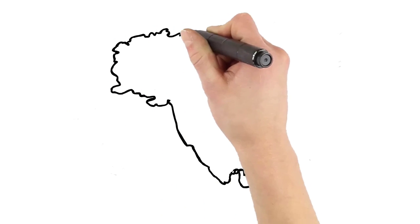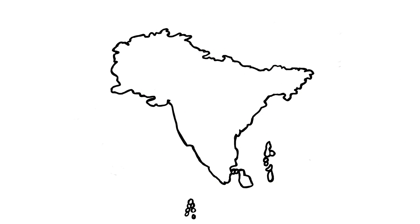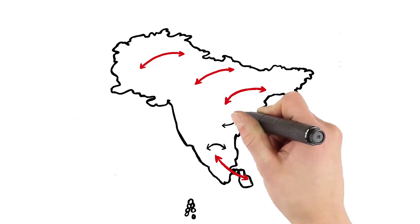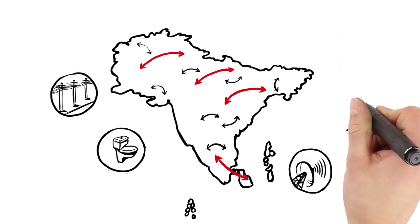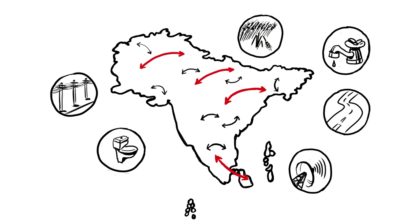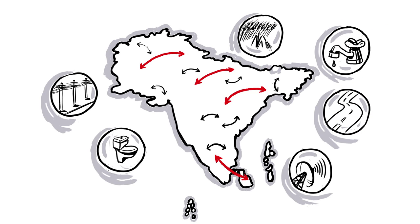Within South Asia, access to infrastructure not only varies from country to country, as one might expect, but also within the regions in those countries. And further differences are seen when analyzing access to different types of infrastructure.